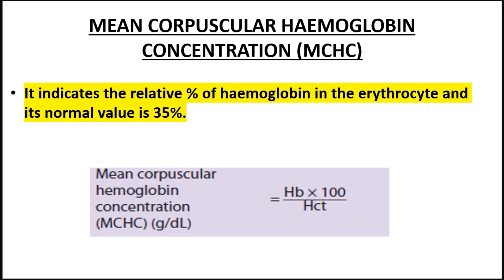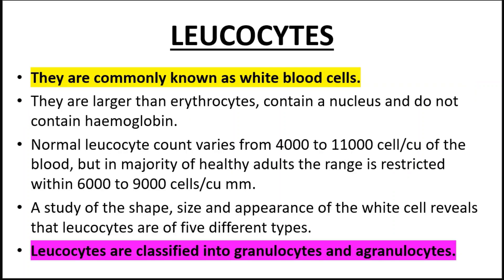The fifth index is the mean corpuscular hemoglobin concentration (MCHC). It indicates the relative percentage of hemoglobin in the erythrocytes. Everyone is supposed to know the blood indices and how to interpret them.